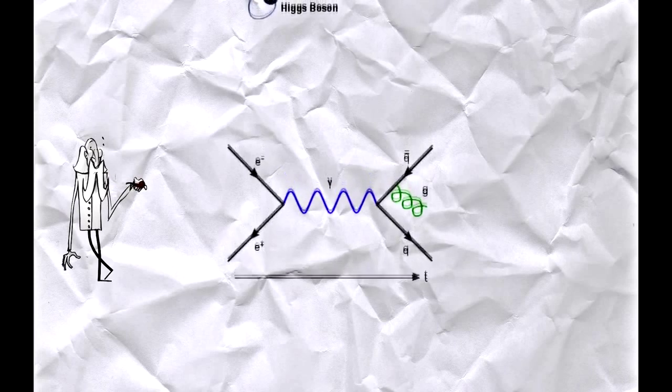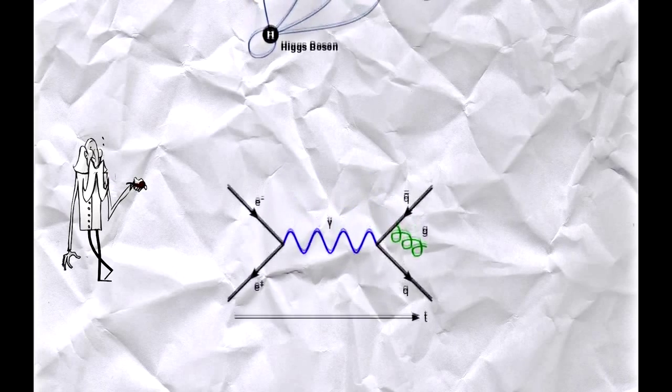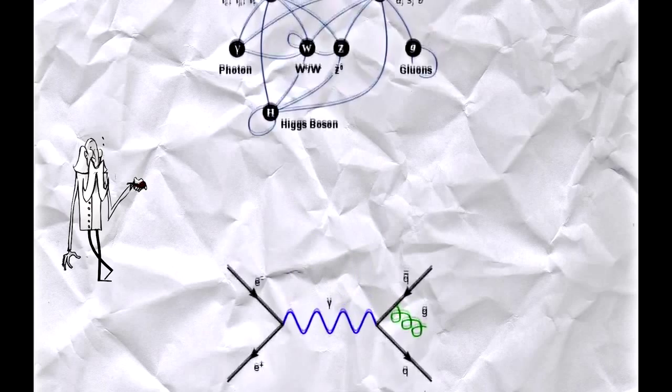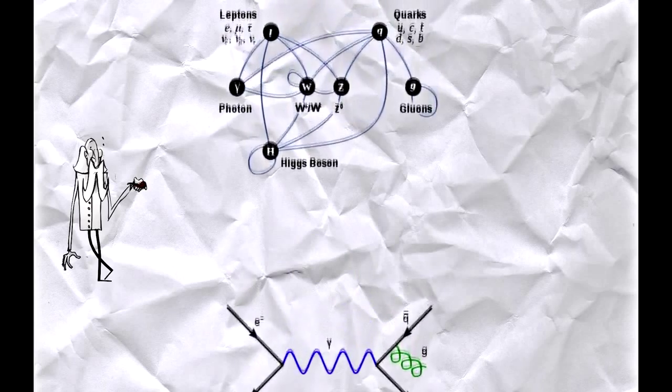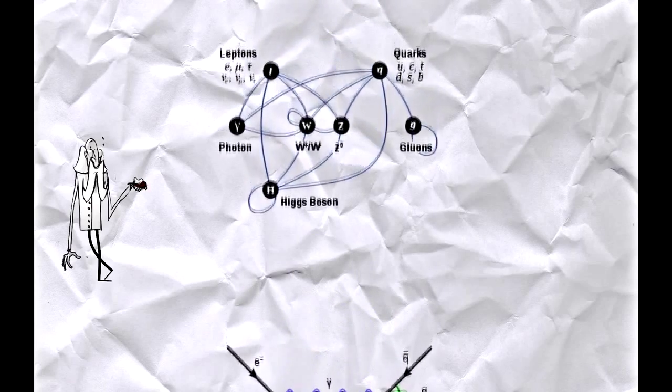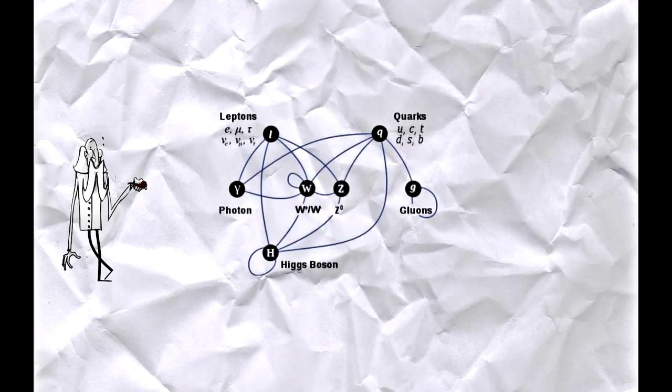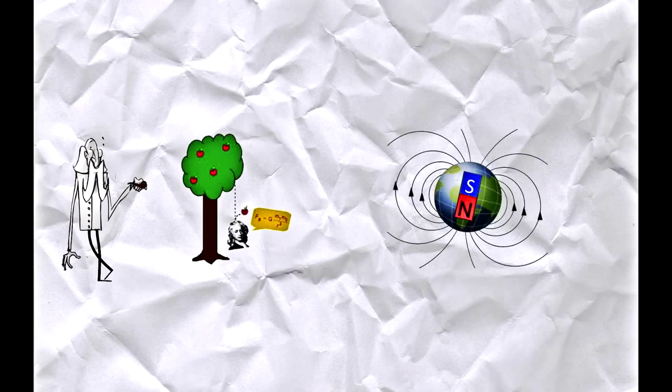¿Y qué pasa cuando estas partículas interactúan entre sí, como en el decaimiento de un neutrón? Los físicos estudian las propiedades de las cuerdas para modelar estas interacciones. Las cuerdas también se manifiestan como partículas de campo llamadas bosones, que producen los efectos que conocemos como gravedad o electromagnetismo.